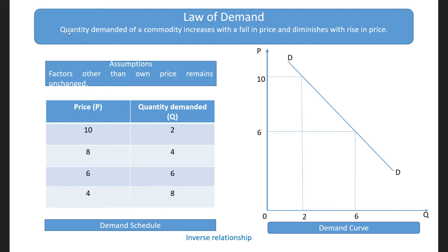This law holds only on certain assumptions. Those assumptions are: Number one, there should not be any change in the price of related goods. In the previous class, we learned that apart from the own price of a commodity, there are other factors which determine demand. The first assumption is there should not be any change in the price of related goods.